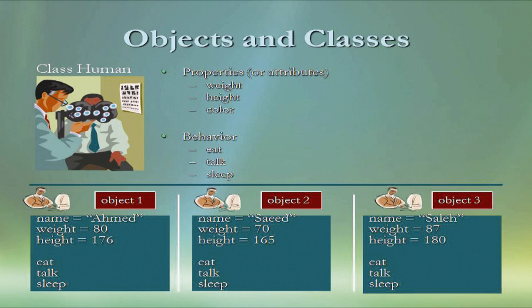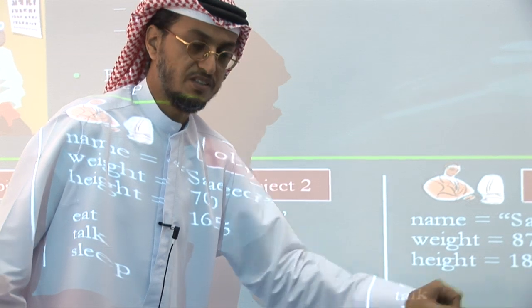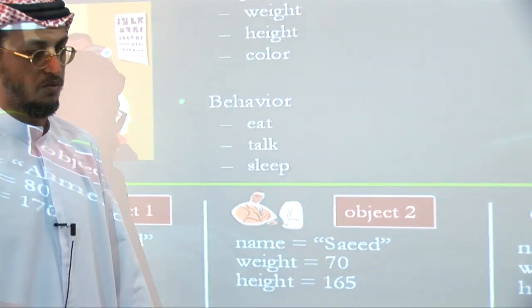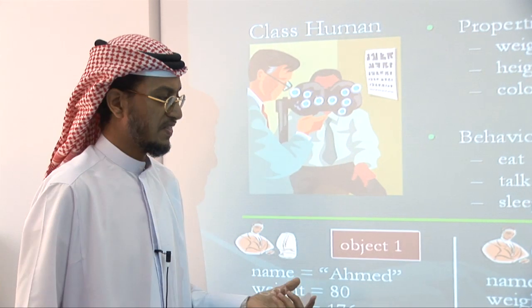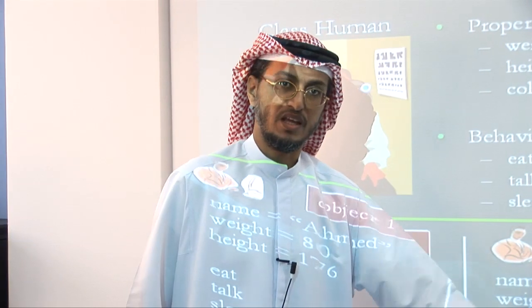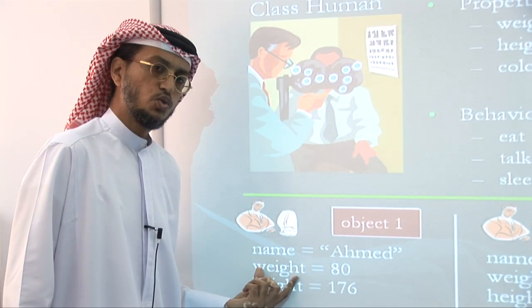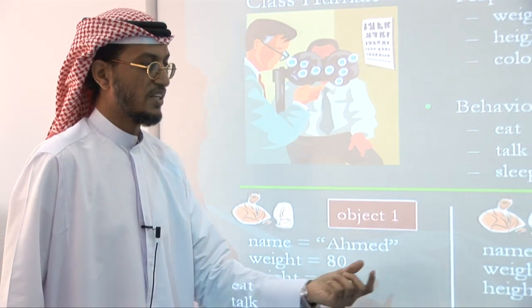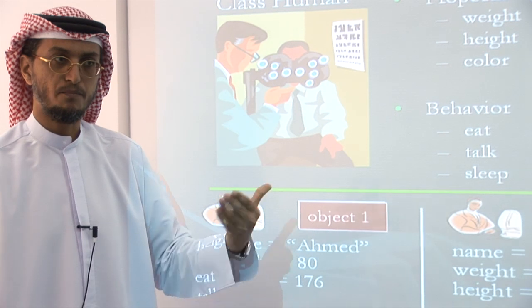A second object called Saeed has a weight of 70, has a height of 180, and he can eat, talk, sleep. You can observe that all of them have the same behavior and almost the same attributes, except that they have different values for the attributes. So the attribute weight is 80 in Ahmed and 70 in Saeed. The values of the attributes change from object to object, but commonly they have the same attributes.